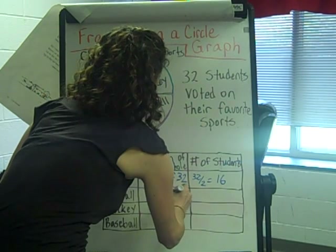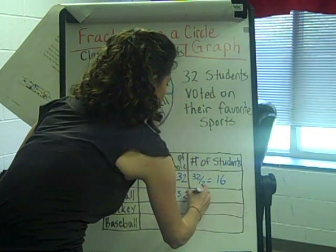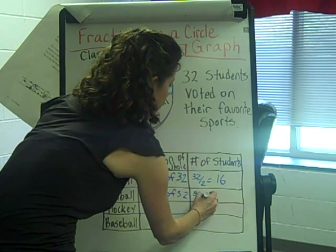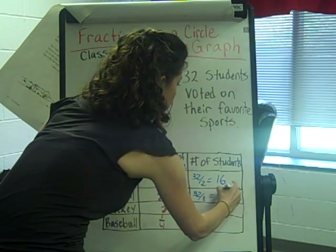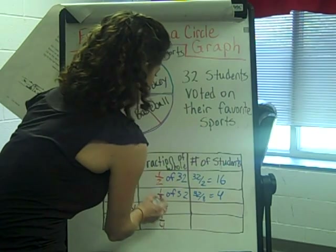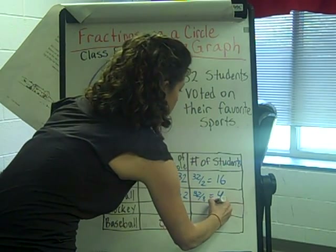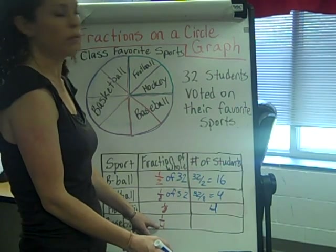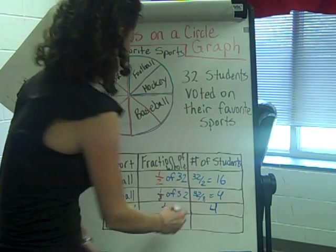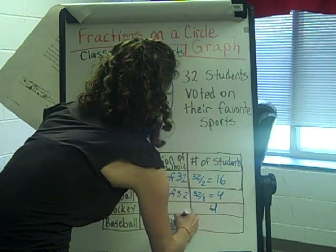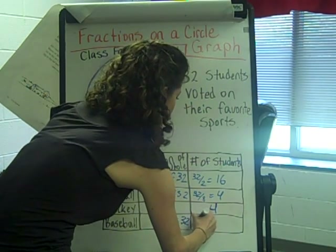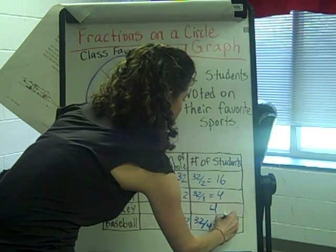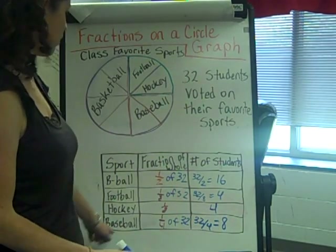One eighth of thirty-two, or thirty-two divided by the denominator of eight, equals four. So four students voted for football, and also four for hockey, because they're both one eighth. Last is one fourth for baseball: thirty-two divided by the denominator of four equals eight. Eight students voted for baseball.